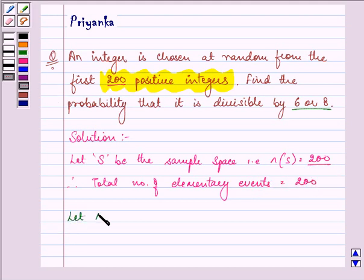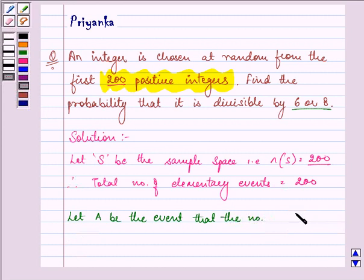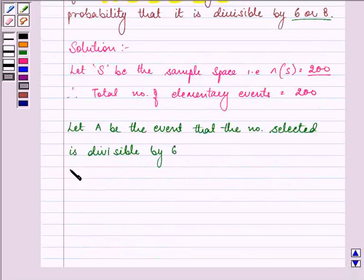Now, let A be the event that the number selected is divisible by 6.